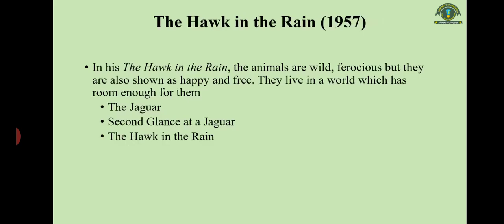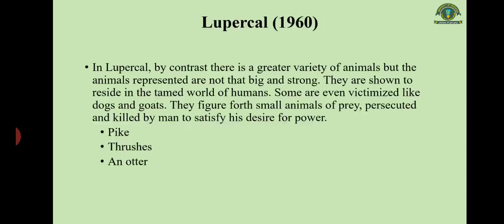The first category — predatory animals — appears in the important collection The Hawk in the Rain (1957). In that collection, animals are wild and ferocious but also shown as happy and free because they are close to nature, living the way God has created them. Important poems include The Jaguar, Second Glance at a Jaguar, and The Hawk in the Rain. In the second phase, by the end of 1960, he wrote the collection Lupercal, which by contrast has a great variety of animals, though they are not as big and strong.